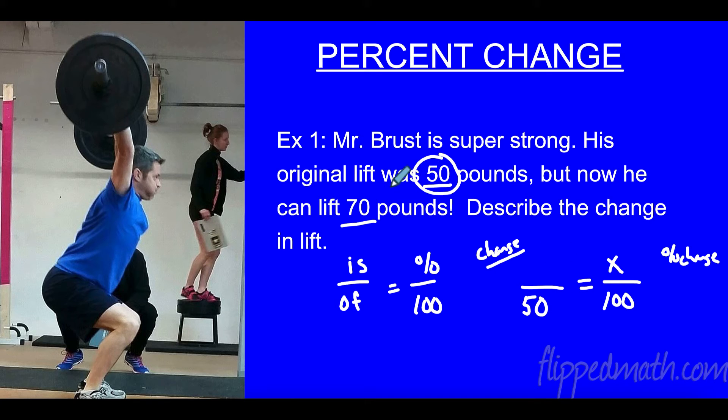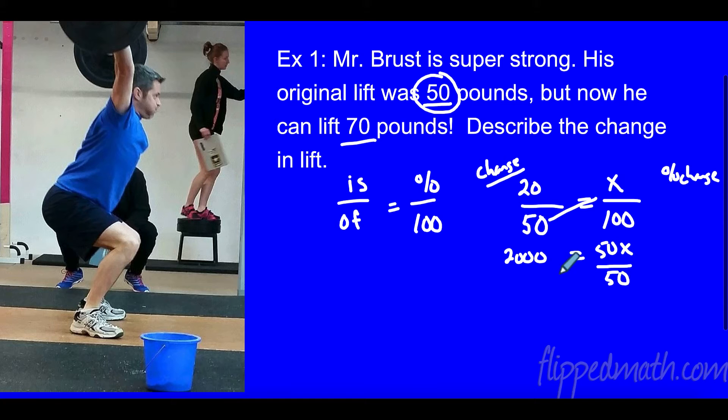So how much did he change? Well, he went from 50 to 70, that's a change of 20 pounds. So now we can cross multiply. 20 times a hundred is 2,000. 50 times X is 50X. We can divide both sides by 50, and then we find that X is 40 percent. So he had a change of 40%. Was it an increase or a decrease? That's another thing. We need to label this don't we? So we need to say that it was a 40% increase.